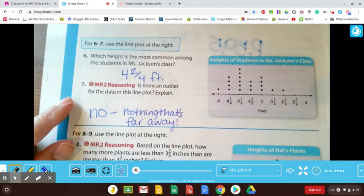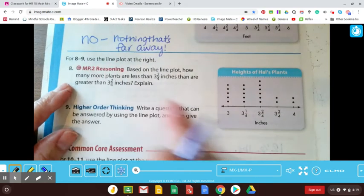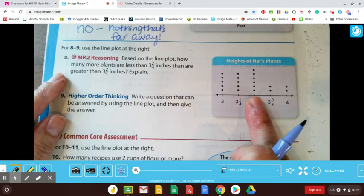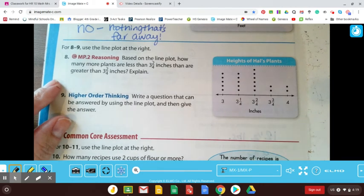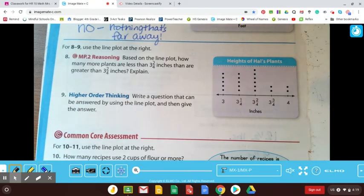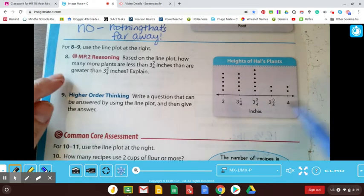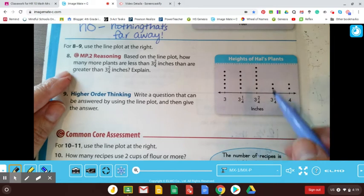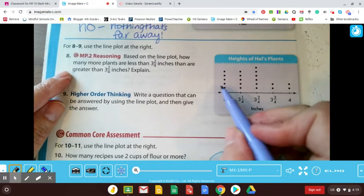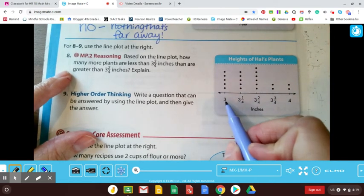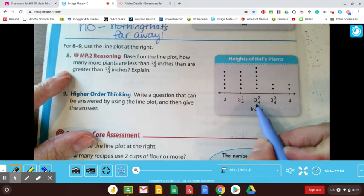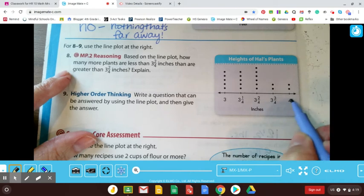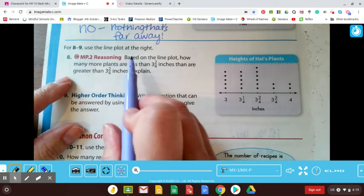All right. And now I'm going to change my focus of my line plot to the heights of Hal's plants. Hal must like plants and he grows some plants at home and he measures how tall they are. All right, good for you, Hal. All right. So he's growing some plants. He has a lot of plants. Wow, look at all those dots. And some are three inches tall and some are three and a quarter inches tall and some are three and a half inches tall. He even has two of them that are four inches tall. Good job, Hal.